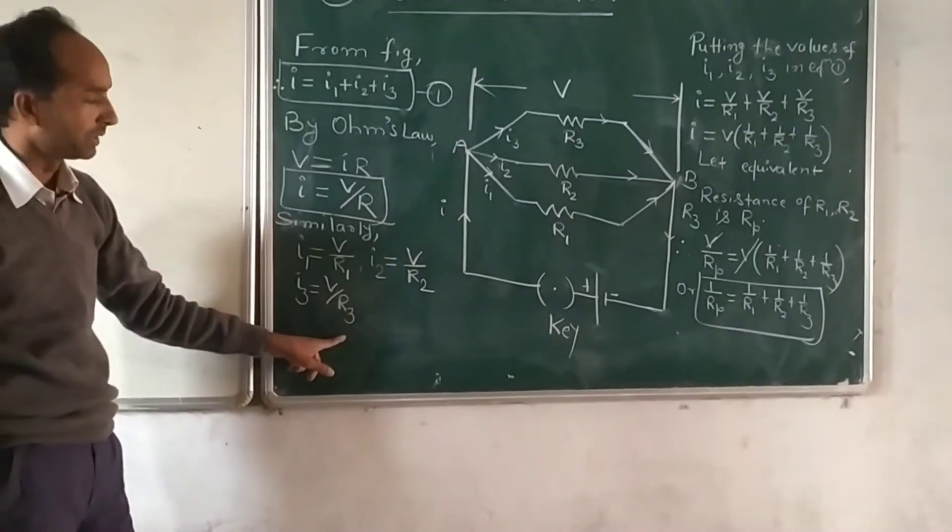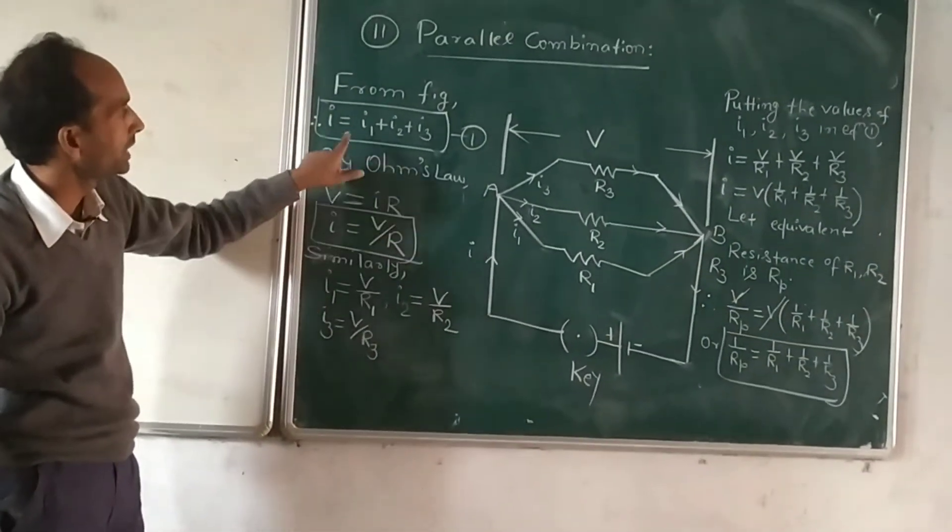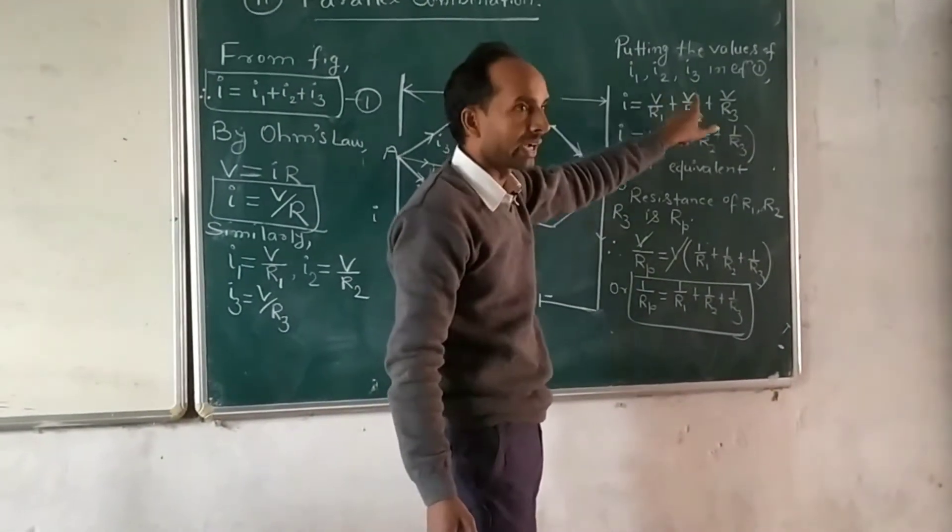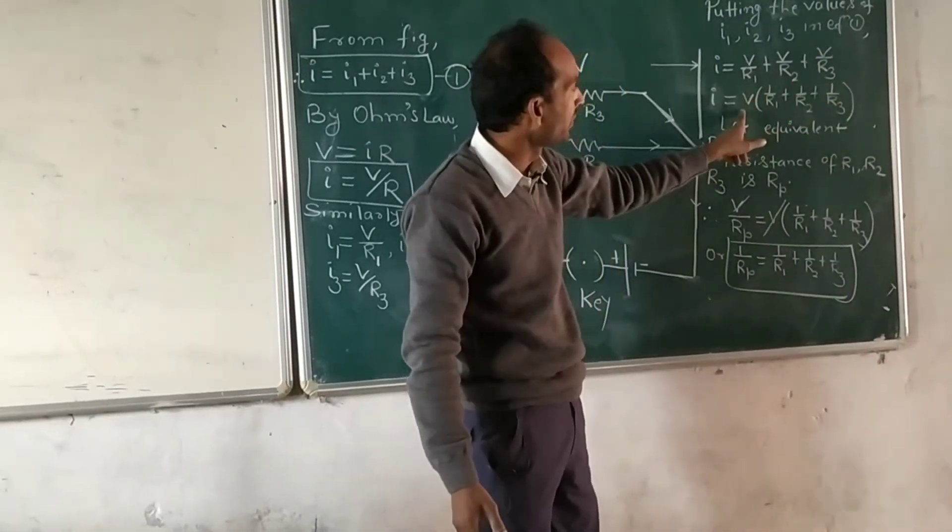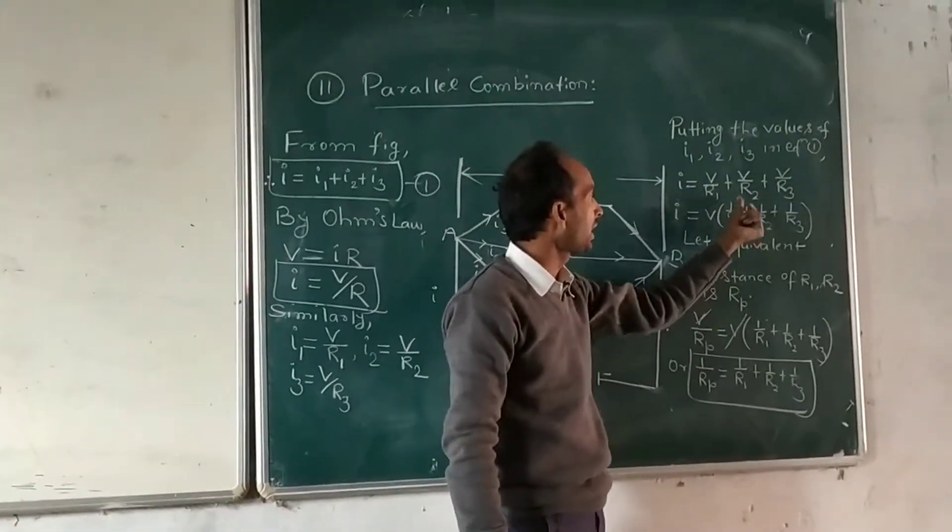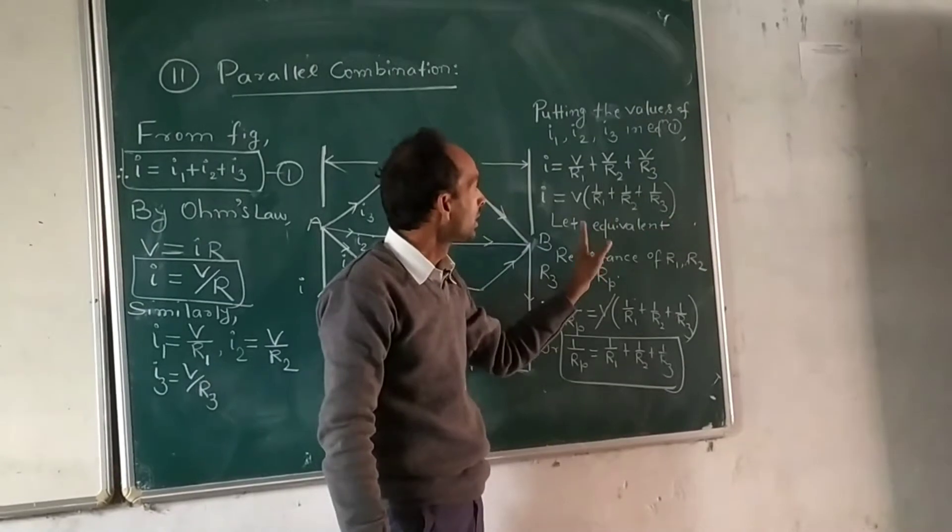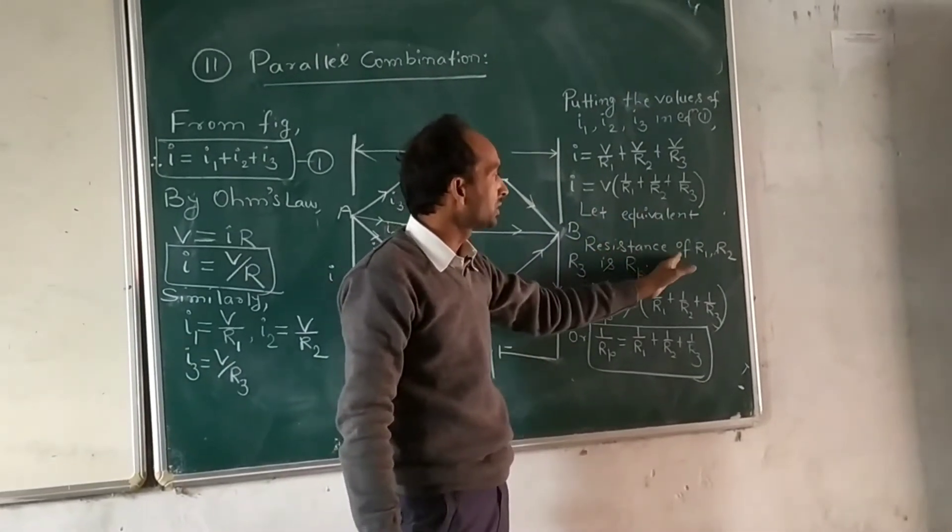Putting all these values in equation one, we get I equals V by R1 plus V by R2 plus V by R3. Let equivalent resistance of R1, R2 and R3 be Rp.